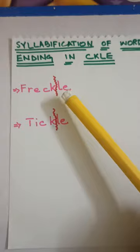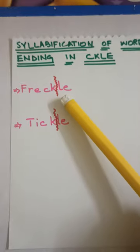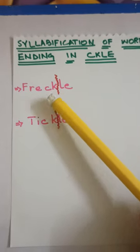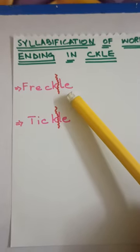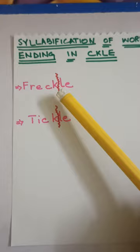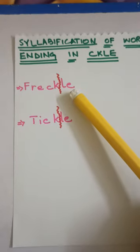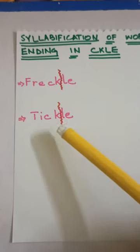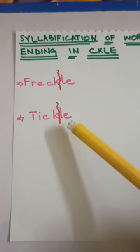We divide this word before L-E — freckle. There are two syllables in this word. Tickle also has two syllables.